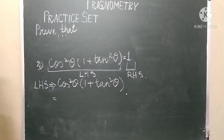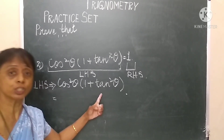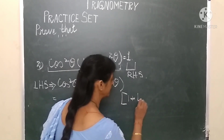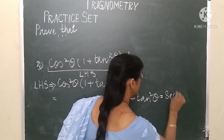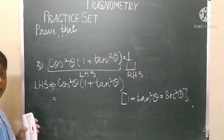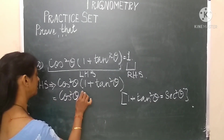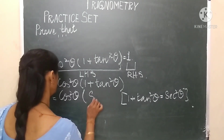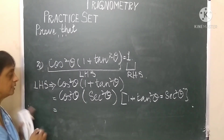We know another trigonometric identity which we can use to replace 1 + tan²θ. We know that 1 + tan²θ = sec²θ. So in the next step, we replace it: cos²θ × sec²θ.